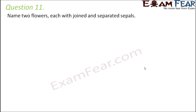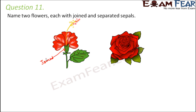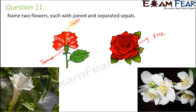Name two flowers each with joined and separated sepals. Different flowers have different arrangements of petals and sepals. If you look at a hibiscus, you would see that the sepals are joined — these are the green colored leaf-like structures. Similarly, in a rose plant you would see free sepals. If you look at a datura flower, the sepals are also joined. In jasmine, the sepals are free. So different flowers have different types of arrangements for petals as well as sepals.